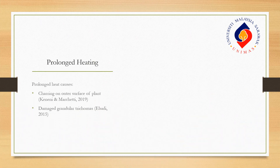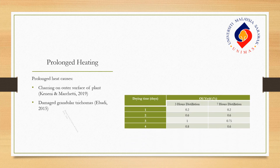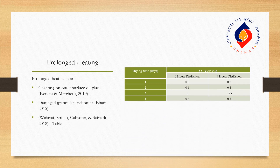Regarding prolonged heating, it will cause shedding on the outer surface of the plant and also damage granular trichomes, leading to a lower oil yield. As seen from the table, on the fourth day, the oil yield produced is lower. Therefore, consideration must be given to both the duration and temperature of drying — it cannot be too high or too long, as this will result in lower essential oil extracted.